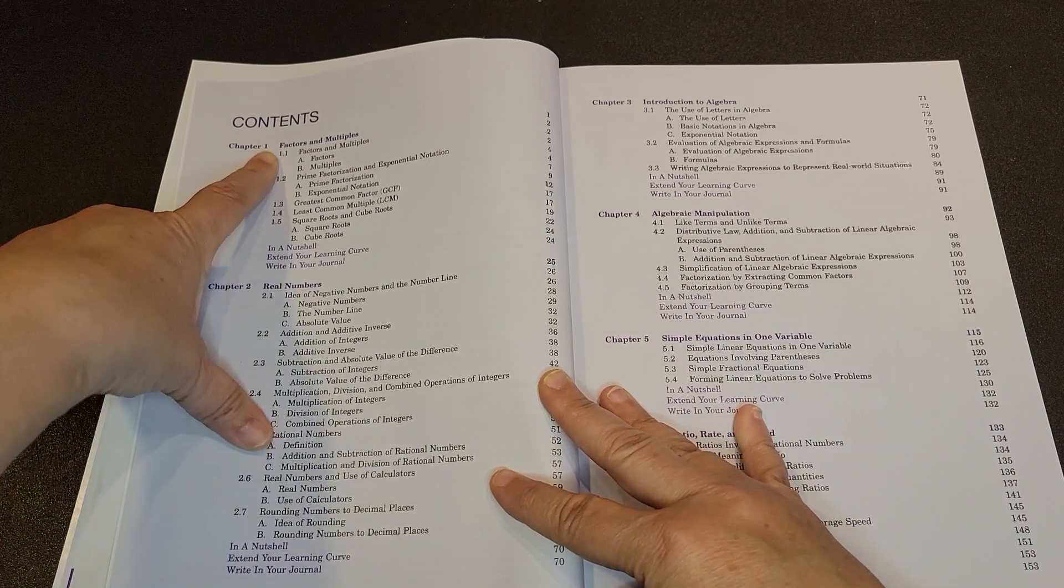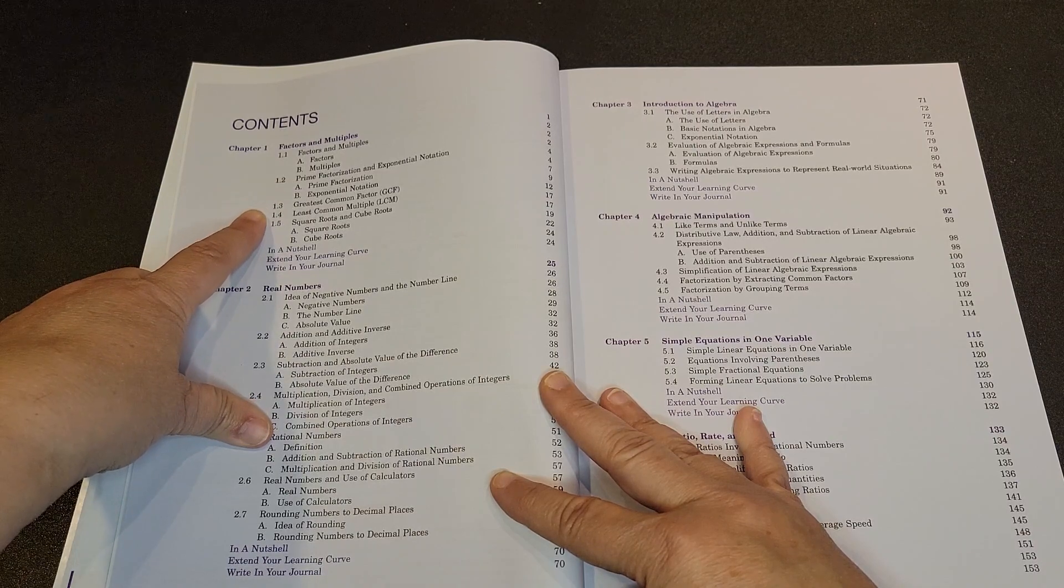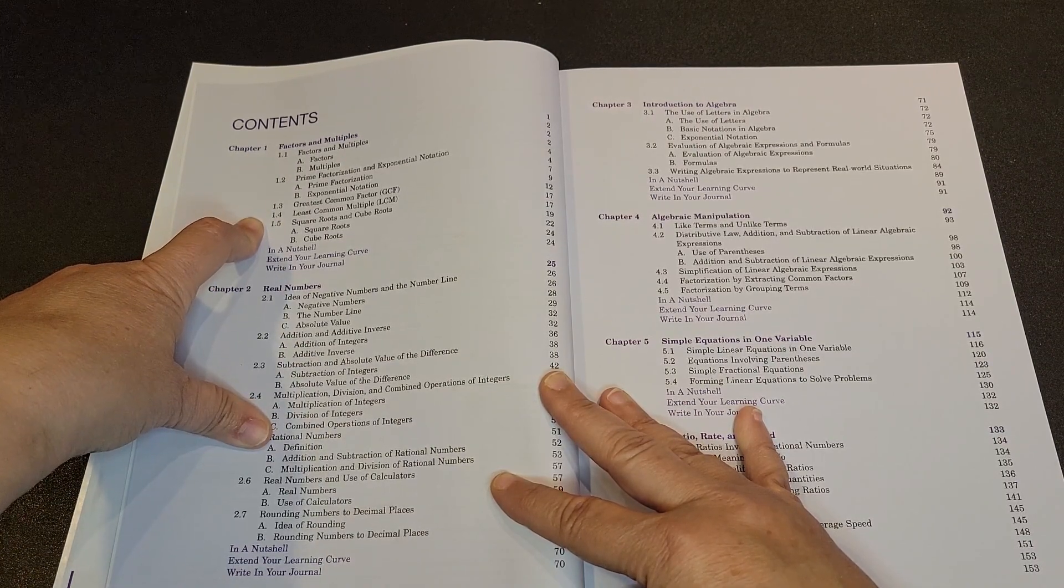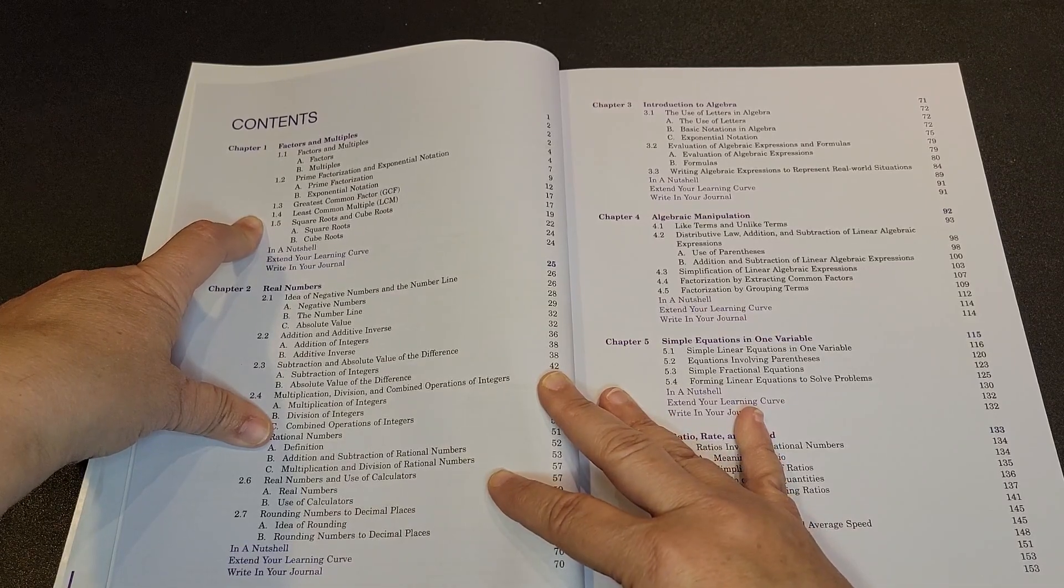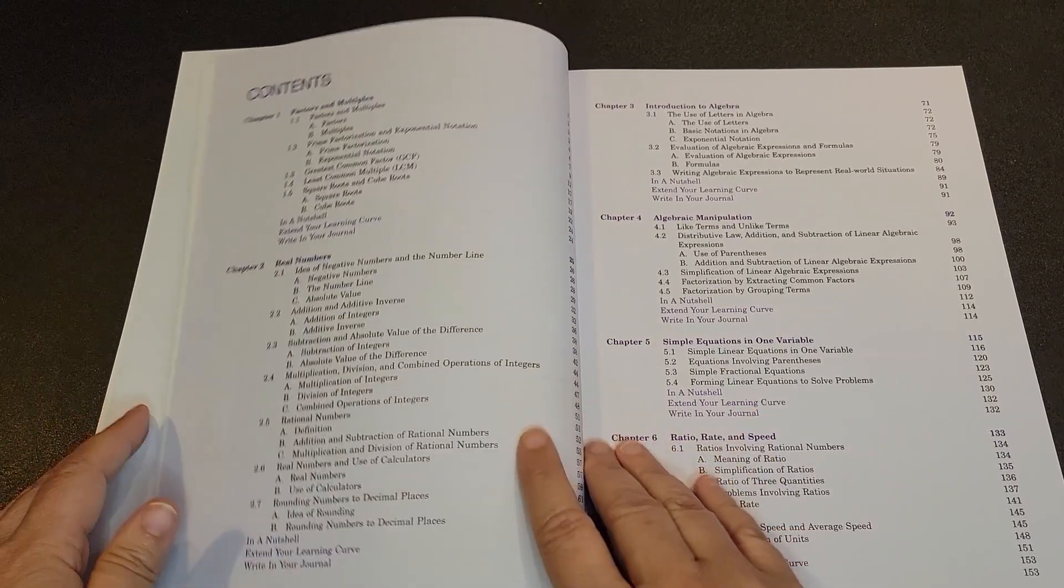So before, what we would have seen is we would have been given specific pages or specific problems within the workbook for each of these sub-sections. And that is not the case. Now, this is chapter one, and you can see factors and multiples, and then chapter two is real numbers.